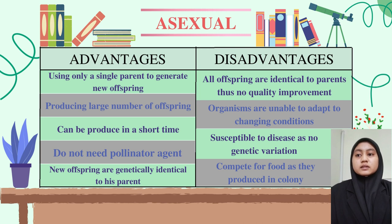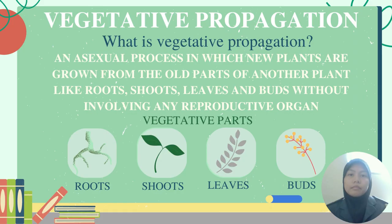The disadvantages of asexual reproduction are: all offspring are identical to parents, thus there is no quality improvement; the organism is unable to adapt to changing conditions; it is also susceptible to disease as there is no genetic variation; and finally, competition for food is intense as they are produced in a colony.